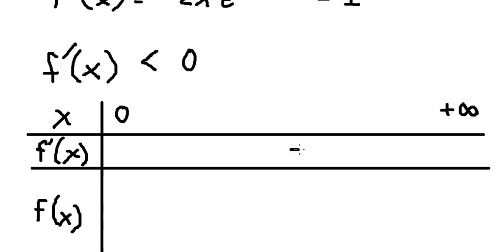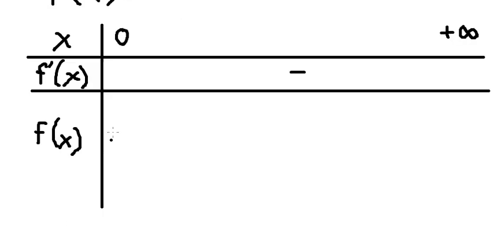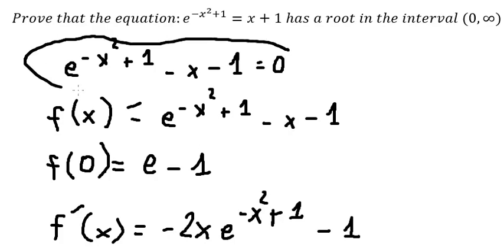We know the first derivative is always negative. The value f of zero equals e minus one. We know that e minus one is greater than zero, so f of zero cannot be a solution of this equation.